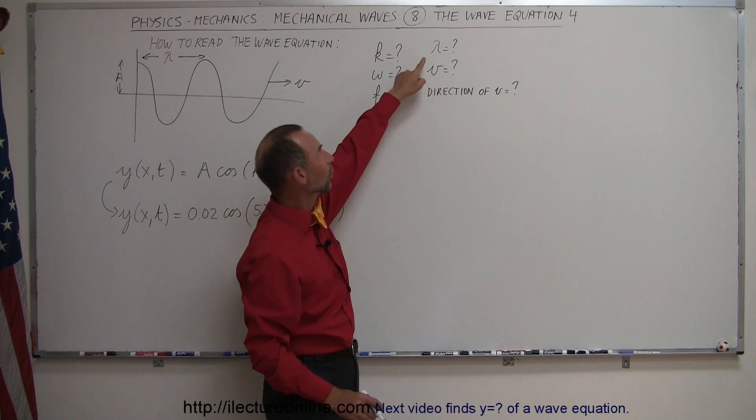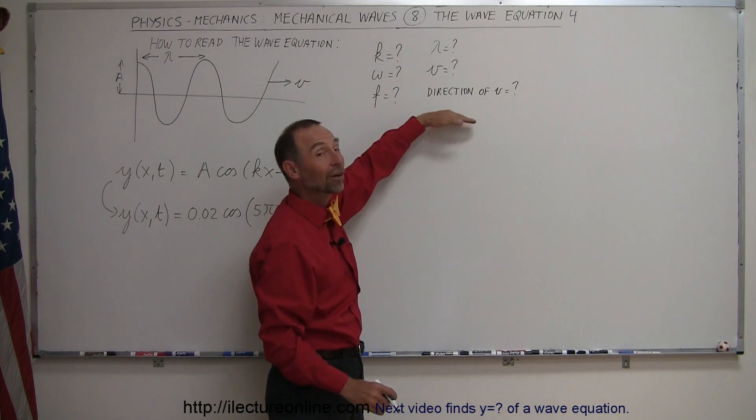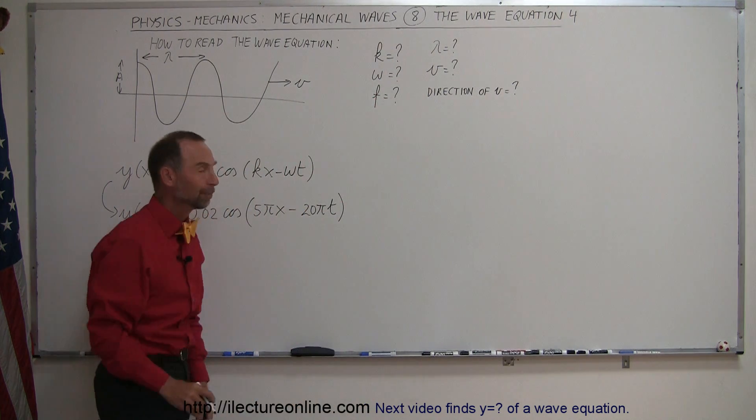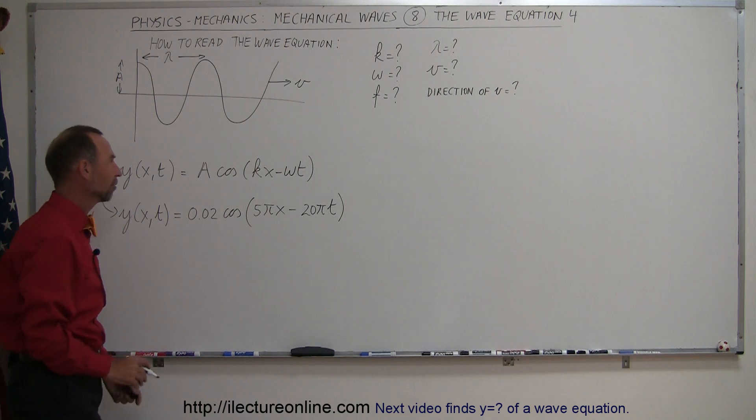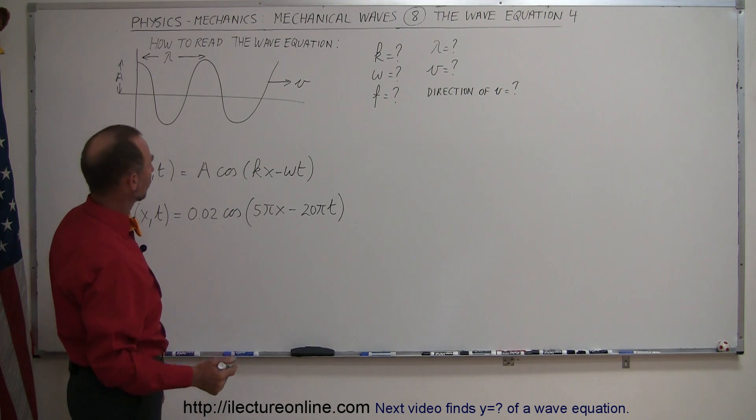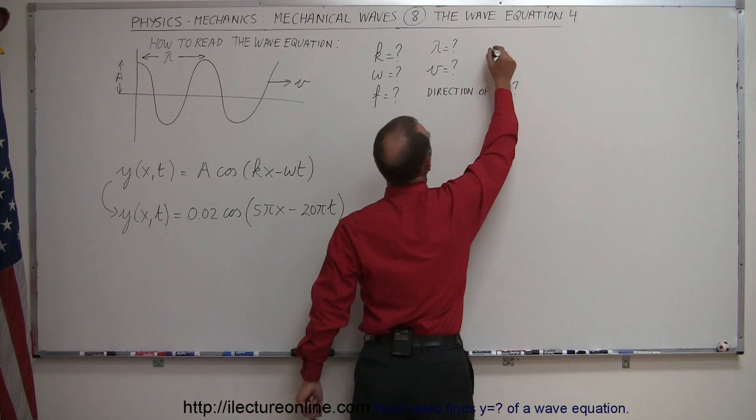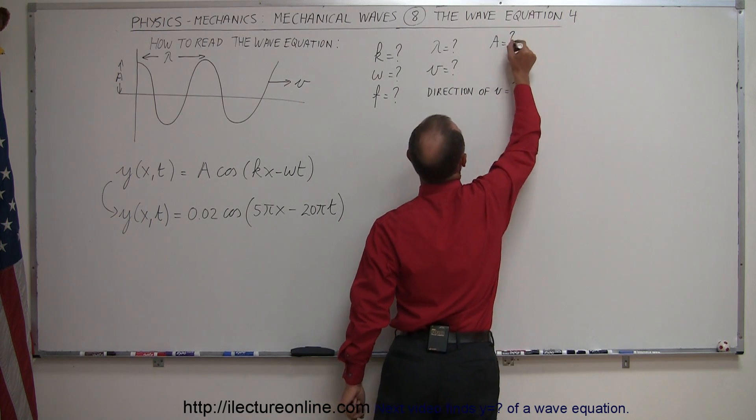What the frequency of oscillation is, what the wavelength is, what the velocity is, and the direction of the wave, the direction of the velocity. How do you find that? Well first of all, we didn't put the amplitude down so let's put the amplitude, what's the amplitude equal to?